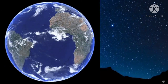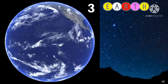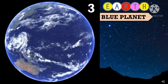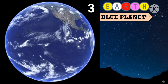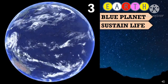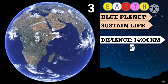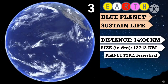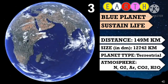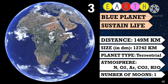The third one is the planet where we live — the Earth. It is also known as the blue planet because it looks blue as seen from outer space. Earth is the only planet that can sustain life. The atmosphere of Earth is made up mostly of nitrogen gas, oxygen, with traces of argon, carbon dioxide, and water. It is a terrestrial planet with only one moon.